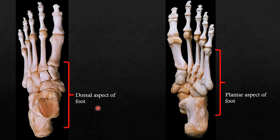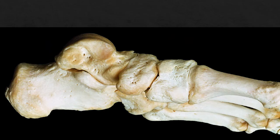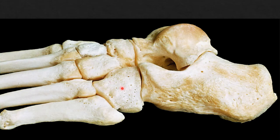In the viva they may ask questions from the articulated foot, but not typically in the practical spotters examination. Here is the medial aspect of the articulated foot showing the medial plantar arch — the calcaneus, talus, navicular, and medial cuneiform bone. On the lateral aspect we can identify the cuboid, calcaneus, talus, cuboid, and then the fifth, fourth, third, second, and first metatarsals. This shows the lateral plantar arch and lateral aspect of the articulated foot.